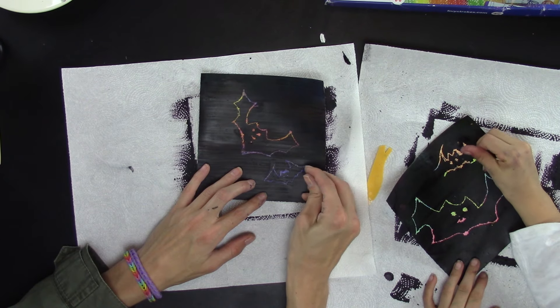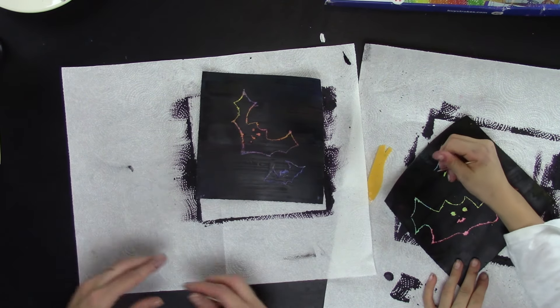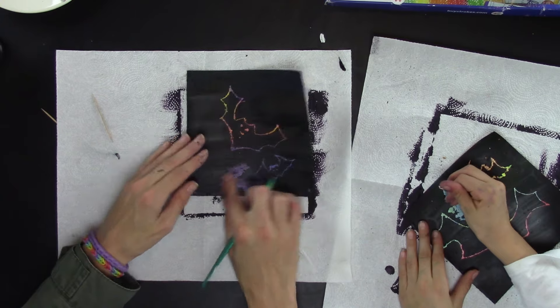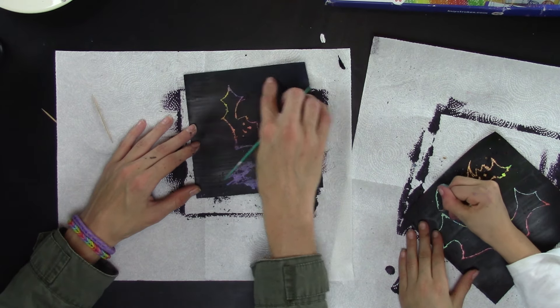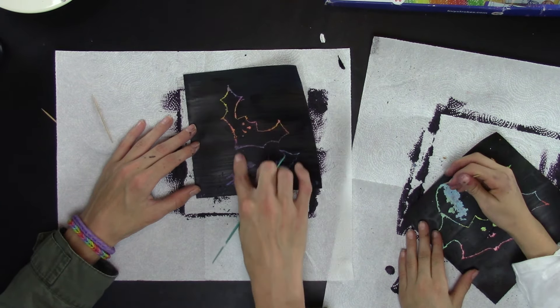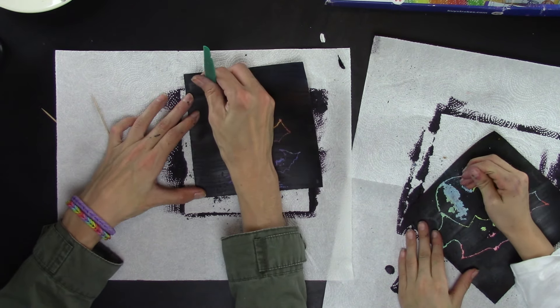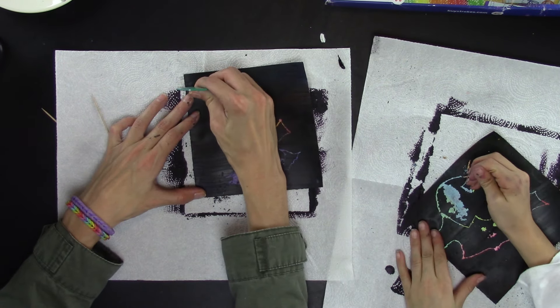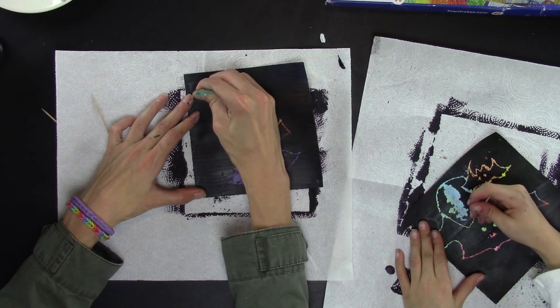All the way. Yep, those are the two bats you liked. Okay, so you can do two things. You can scrape everything around your bat off, or you can just scrape in moon shapes and star shapes like this.